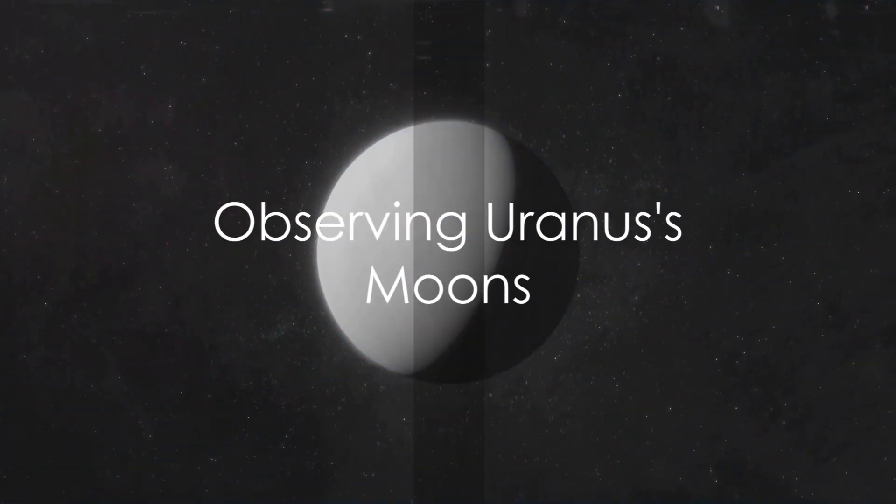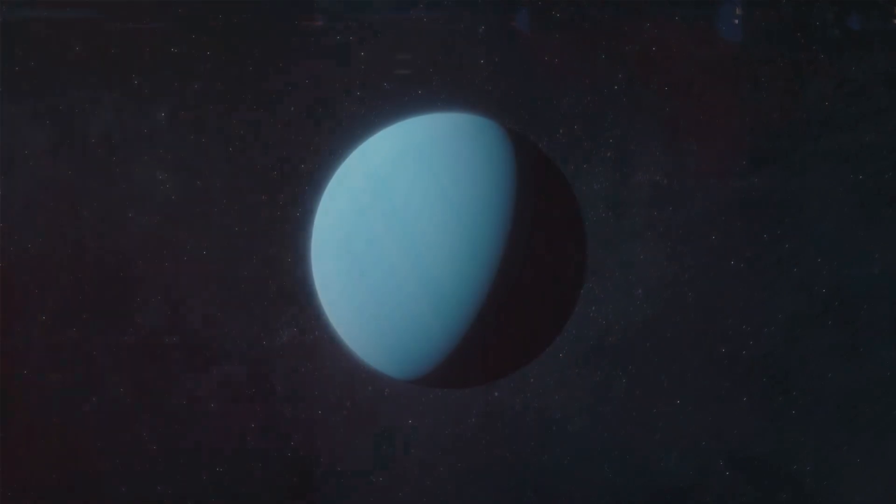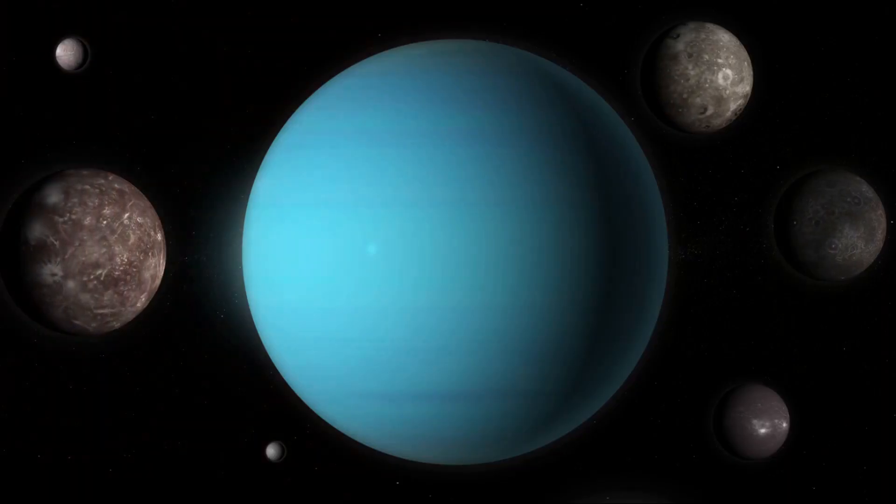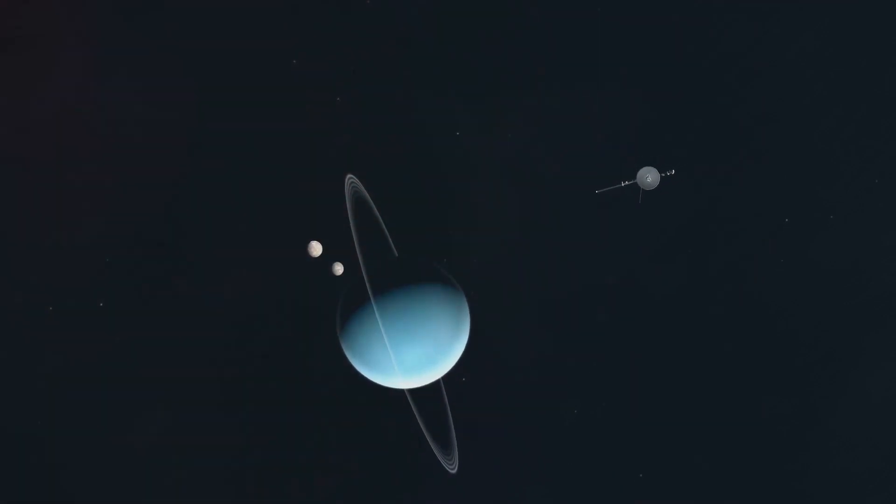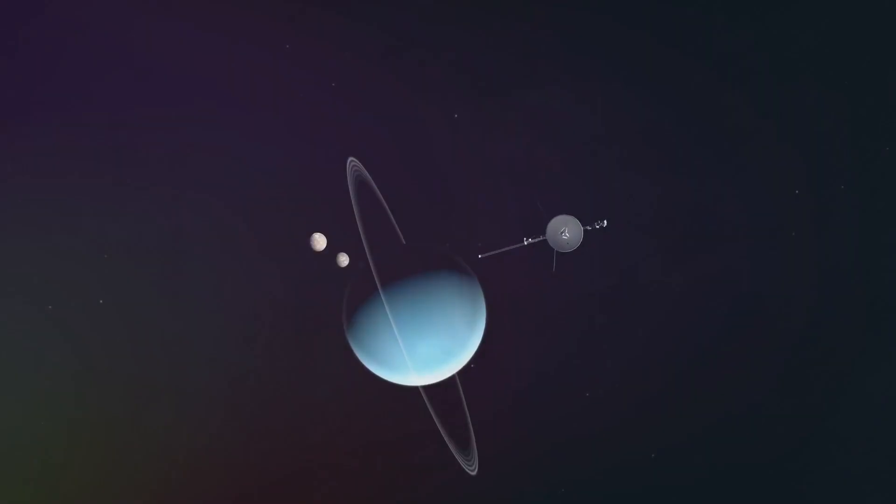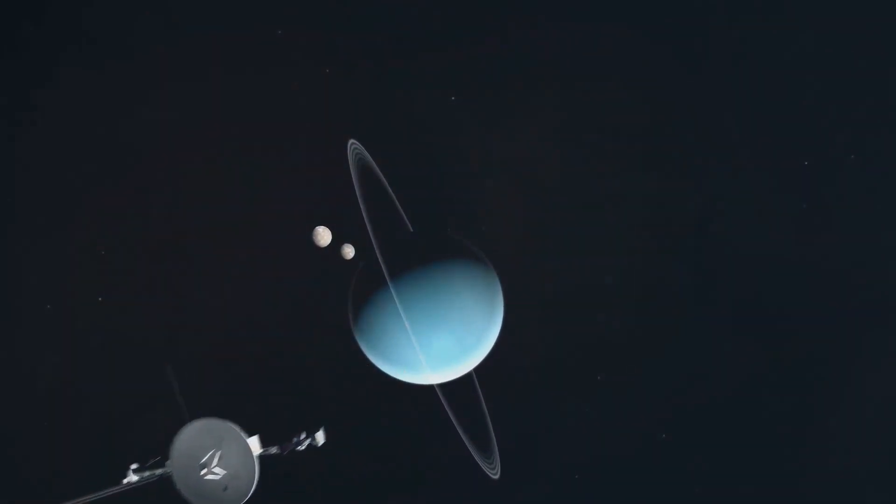But the Webb Telescope's capabilities do not stop at capturing images of Uranus' rings. It has also observed six of Uranus' brightest moons. This is especially intriguing because five of these moons are considered potential ocean worlds, capable of hosting life.